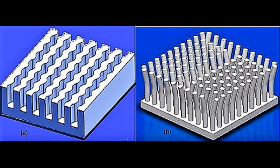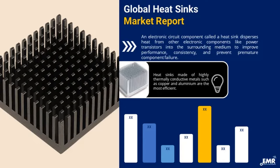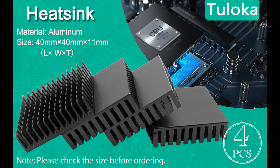Temperature regulation refers to the process of maintaining a consistent and optimal temperature within a system or device, often through the use of control mechanisms. In the context of electronics and heat sinks, temperature regulation involves managing and stabilizing the temperature of electronic components to ensure they operate within safe and efficient limits. Heat sinks play a critical role in temperature regulation by dissipating heat generated by components such as CPUs, GPUs, and power transistors.